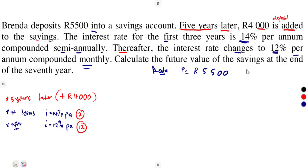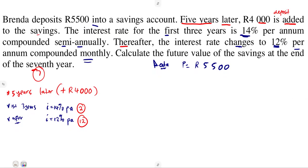The question asks us to calculate the future value of the savings at the end of the seventh year, meaning the total number of years for everything that is happening here is seven. So let's draw our timeline, because there are a lot of things that happened.